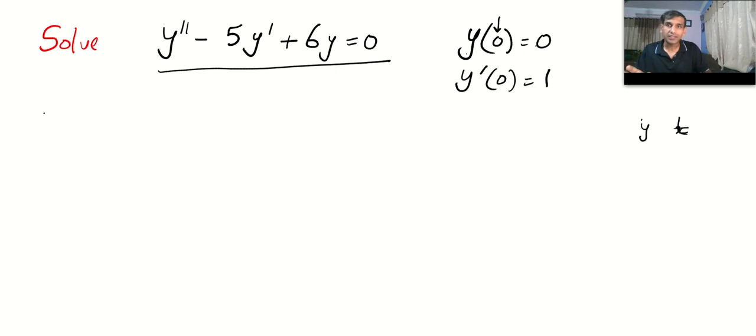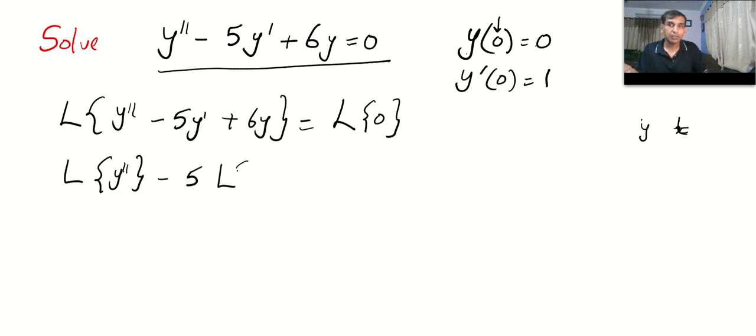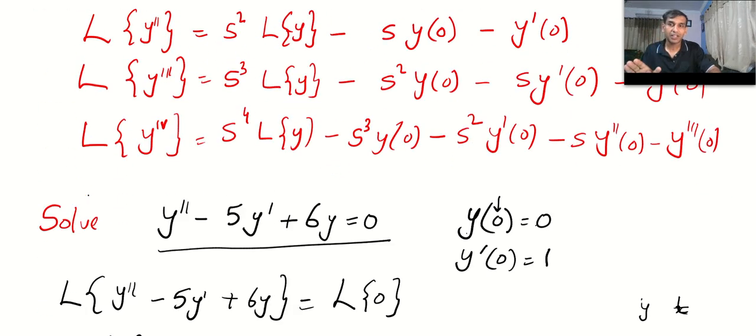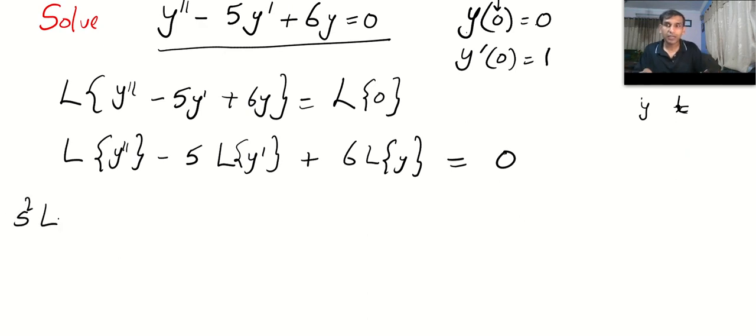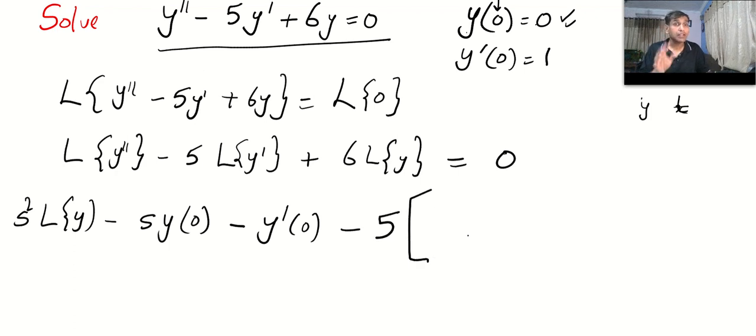First, take Laplace on both sides. L{y'' - 5y' + 6y} = L{0}. Laplace is linear so we can split it and constants come outside. Laplace of 0 is 0. Laplace of y'' is s² L{y} - sy(0) - y'(0). Then minus 5 bracket - this bracket is very important because you will be writing two terms and this 5 belongs to both.